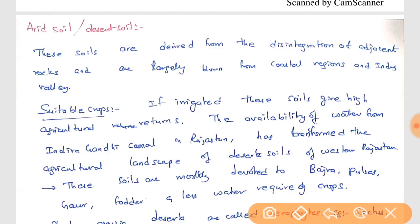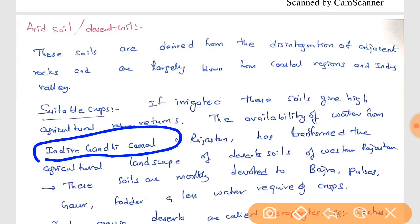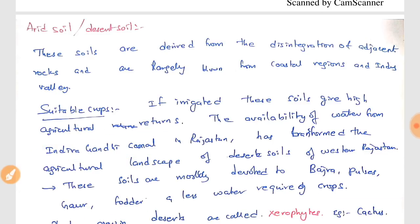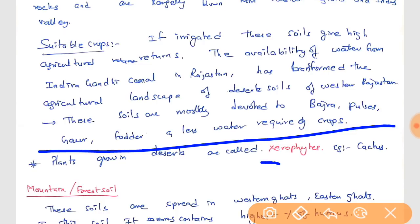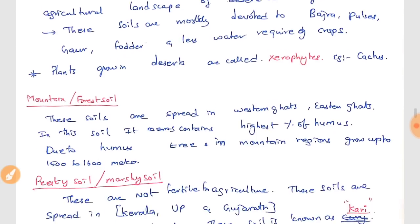Now comes arid soil, which is desert soil. These are brought by flowing winds from the Indus river system to Rajasthan. Water is supplied to Rajasthan through the Indira Gandhi Canal. With minimal water requirements, crops like bajra, pulses, guar, and fodder crops can be grown. Plants which grow in deserts are called xerophytes — they are cactus-like plants.